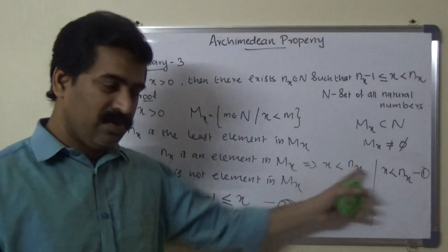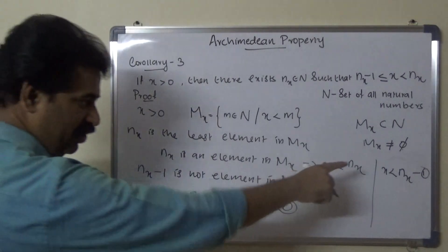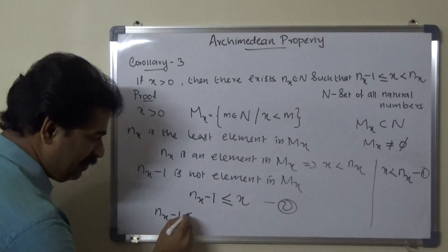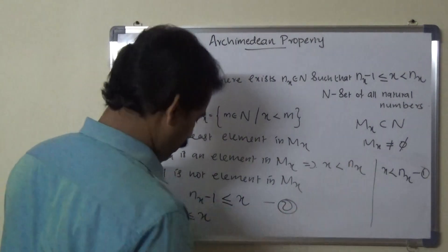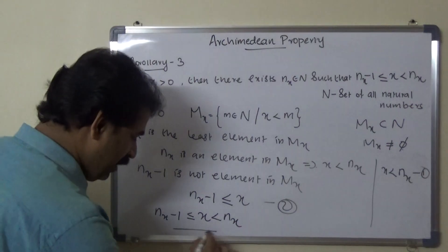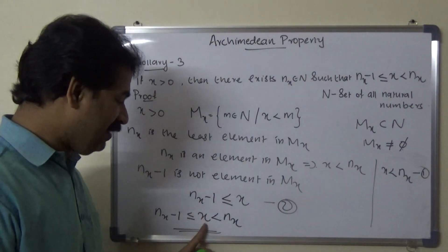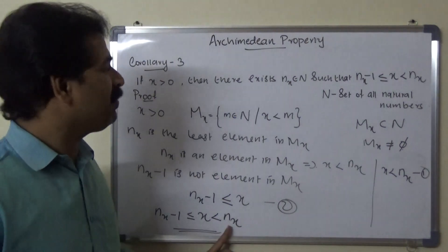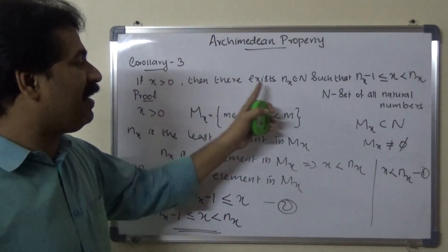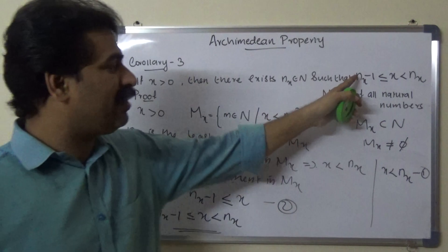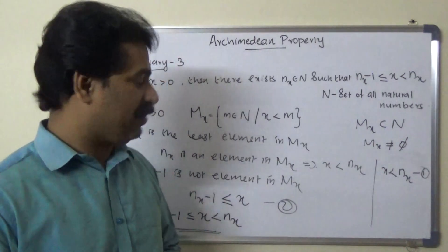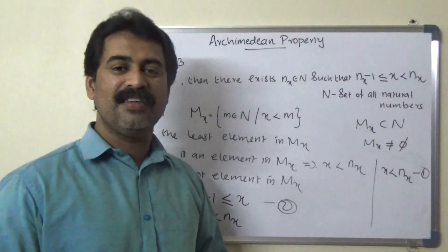We combine these two results. From the second result: Nx minus 1 is less than or equal to x. From the first result: x is less than Nx. So we get Nx minus 1 less than or equal to x less than Nx. That means if x is any positive real number, then there exists a natural number Nx such that Nx minus 1 is less than or equal to x less than Nx. I hope you understood. Thank you.